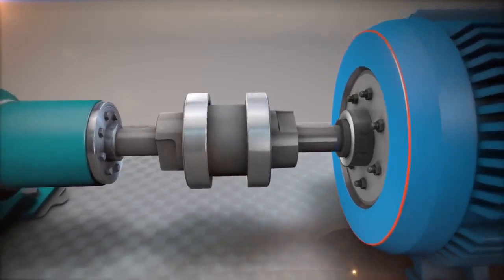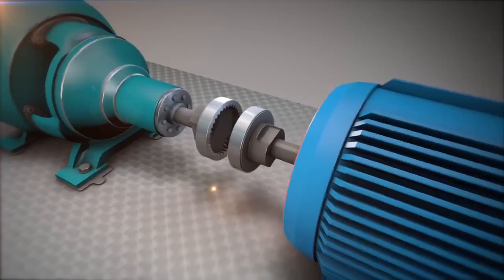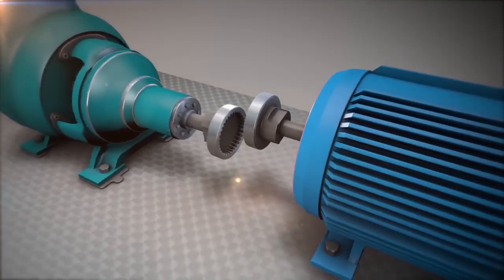In the real world, we aim to align the machines as collinear as possible, within tolerance, at the coupling or point of power transmission.